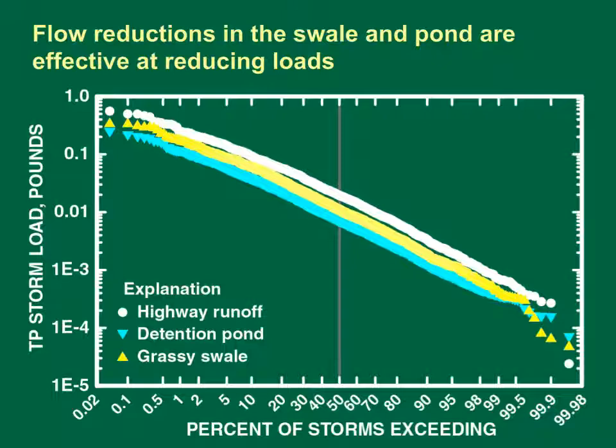Both the swale and pond are effective at reducing loads. This graph shows the loads of total phosphorus in highway runoff, effluent from a grassy swale, and effluent from a detention pond BMP, with a log scale on the vertical axis and the percentage of storms equaling or exceeding a given load on the horizontal axis. The graph shows that the pond is more effective at reducing loads for most storms than the swale, mainly because the pond is much more effective than the swale for reducing concentrations. This example shows how SELDOM can be used to evaluate different BMPs for meeting load reduction objectives in TMDL studies.